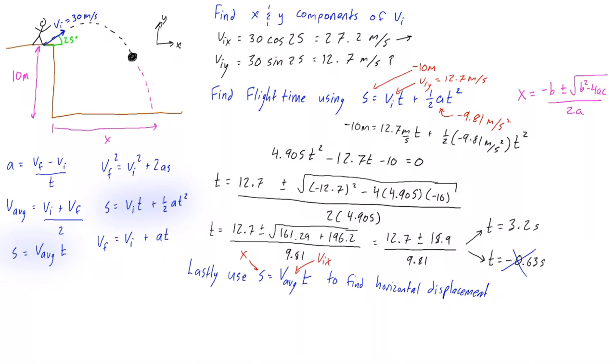That is this one right here. When we're applying this in the horizontal direction, that means that s here is going to be x. V_av is going to be equal to v_ix because there is no acceleration in the horizontal direction. Acceleration is zero, so the velocity is constant, so the average velocity is the same as the initial velocity. And t is just going to be 3.2 seconds.